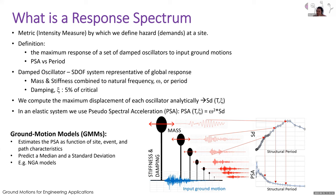Ground motion models — the GMPEs or NGA models — study all the data and physical constraints to develop estimates of spectral acceleration as a function of site, event, and path characteristics. The site is typically VS30, the event is magnitude, and the path is distance. We use these in our deterministic and probabilistic analyses. Ground motion models predict a median as well as a standard deviation. The 84th percentile is the median plus one standard deviation. These are developed from large databases of ground motion records.